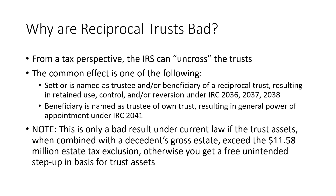From a tax perspective, the effect is that the IRS can uncross the trusts. The uncrossing of the trusts isn't necessarily a bad outcome unless it leads to one of the following. One, it can lead to a situation where a settlor, after the uncrossing, could be a trustee and/or beneficiary of a reciprocal trust — that goes back to the life beneficiary piece. As a result of this uncrossing, it results in retained use, control, and/or reversion of the settlor, which causes all of the trust assets to be included in the settlor's gross estate for estate tax purposes at death. Another bad outcome is that it could cause a beneficiary to be named trustee of their own trust, which could result in a general power of appointment under Code Section 2041 if the distribution standards in the trust aren't sufficiently limited.